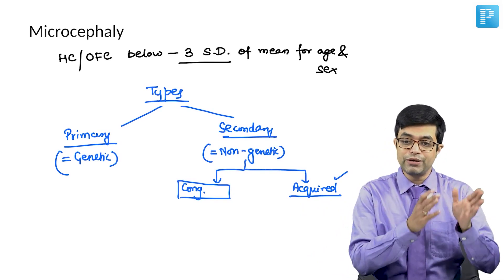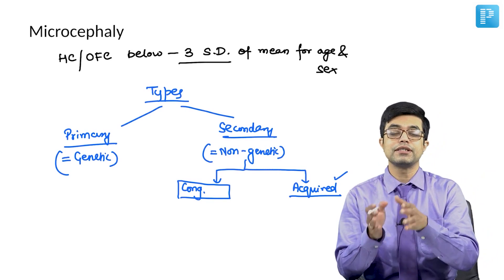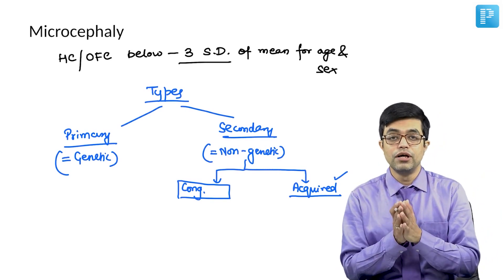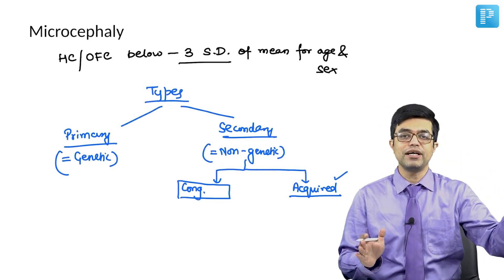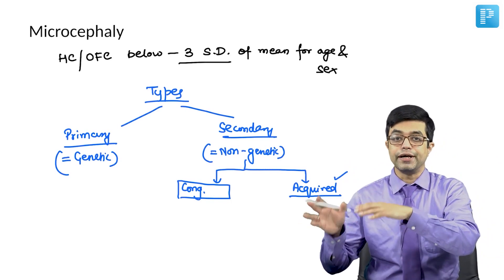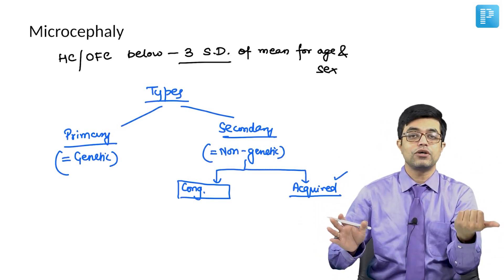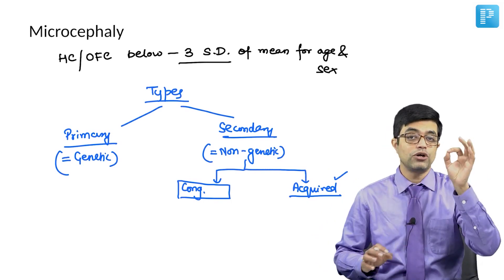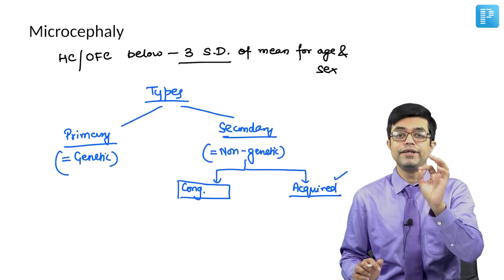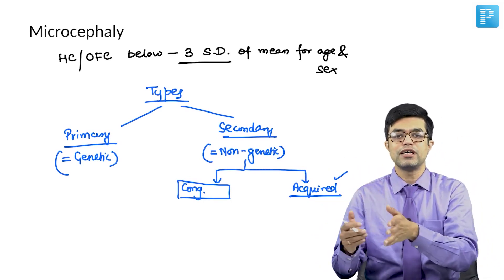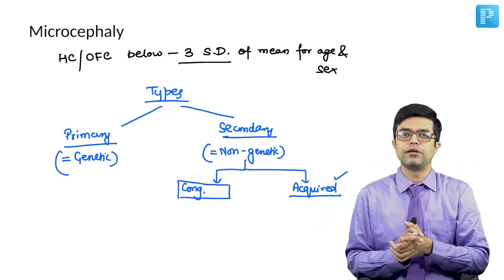People get confused between primary causes and congenital causes. This is not the classification. Classification is simple. Primary is genetic. Secondary is non-genetic. Among secondary causes, you can have congenital causes. Congenital does not mean on day 1. Congenital here means within 3 to 4 weeks and acquired are the ones which manifest beyond the neonatal period.